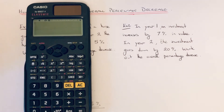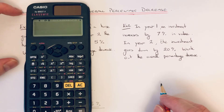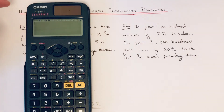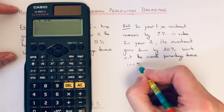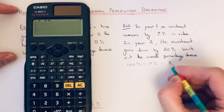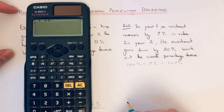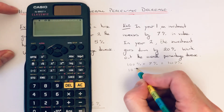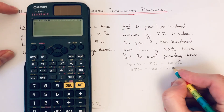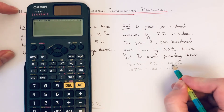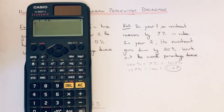In year one it increases by seven percent. Since it's an increase, we add the percentage on to a hundred, giving us 107 percent. We then convert that into a decimal by dividing by a hundred, which gives us 1.07. That is our first decimal multiplier.